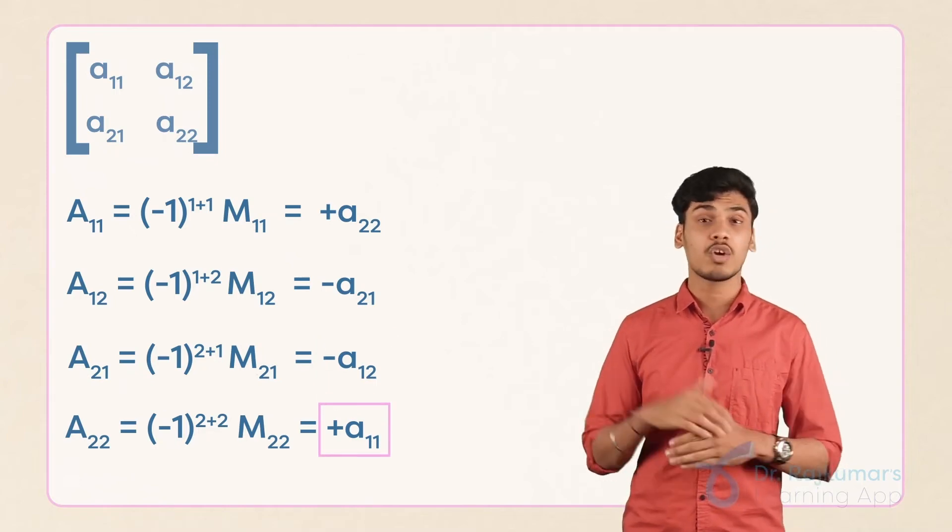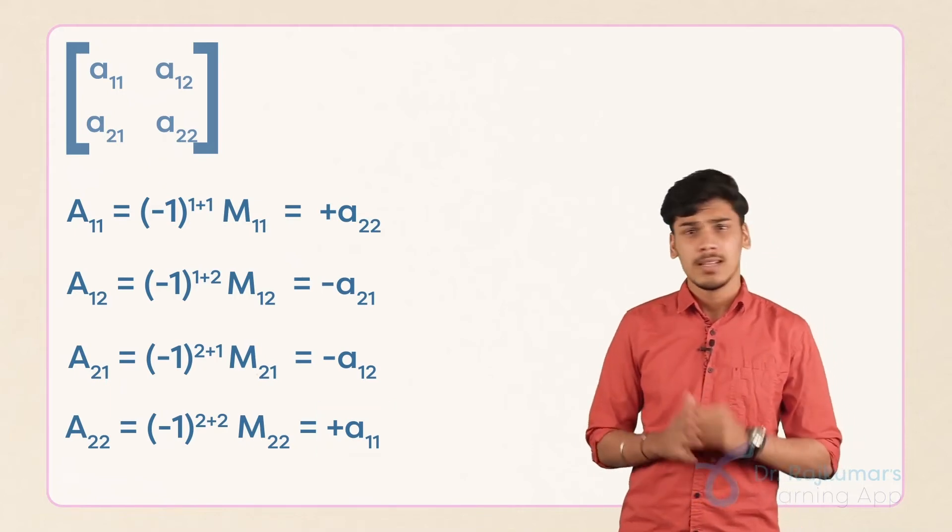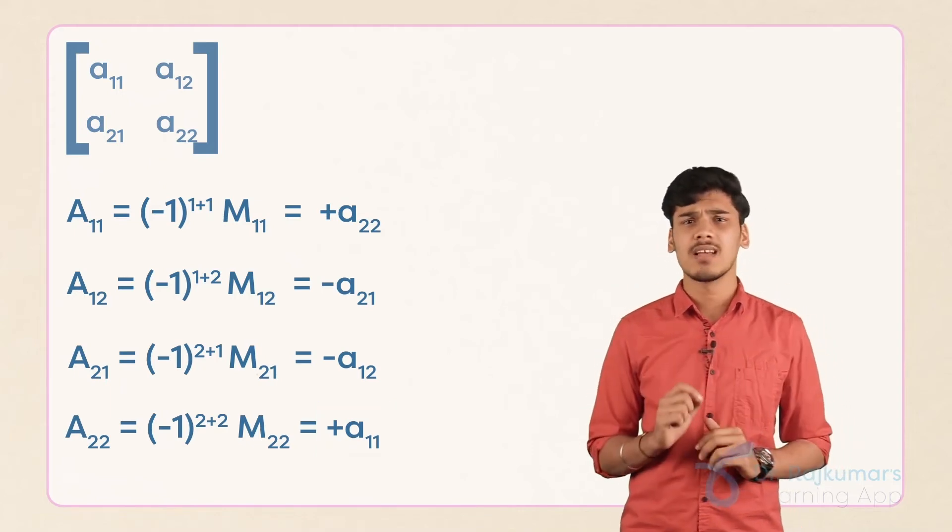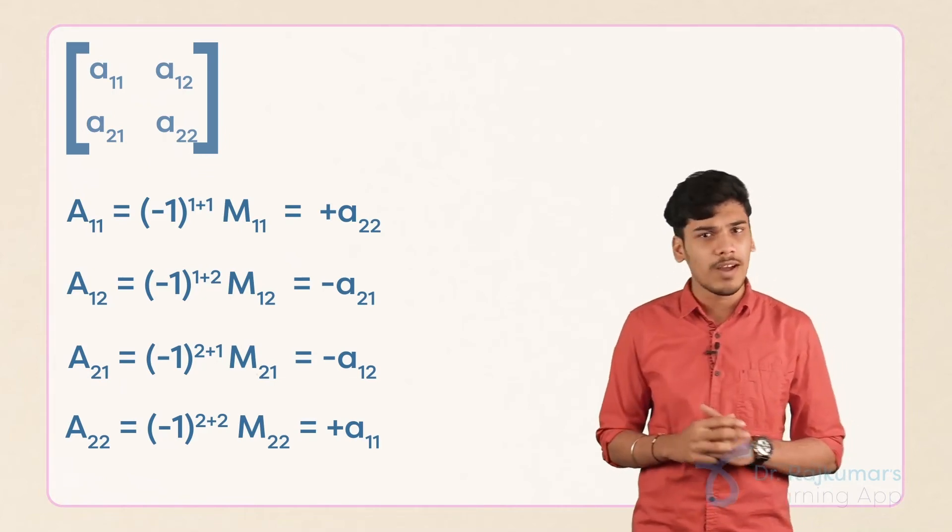These are the cofactor values of each and every element inside the matrix. What is the difference between this cofactor and minor? It is nothing but that sign. So if you are able to find the sign, then it will be really easy to find the value of cofactor also.